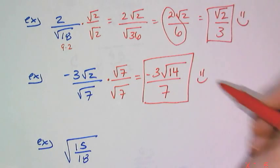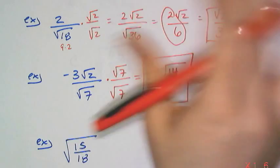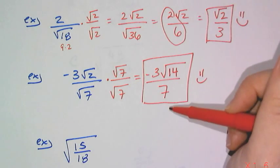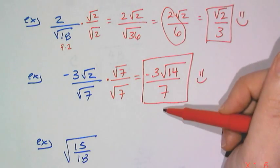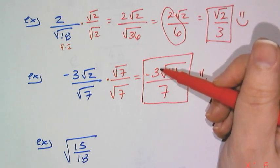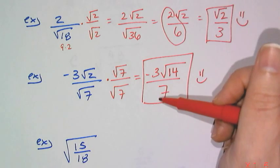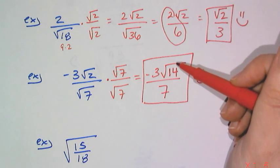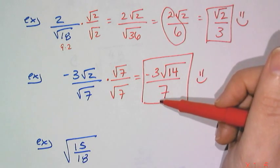Now, one thing that I see people do, which you cannot do, is people will see the 14 and the 7 and try to simplify those, but you can't, because that's not really a 14. That's a square root of 14, and that's a 7. So things that are under the radical and not under the radical cannot be simplified.